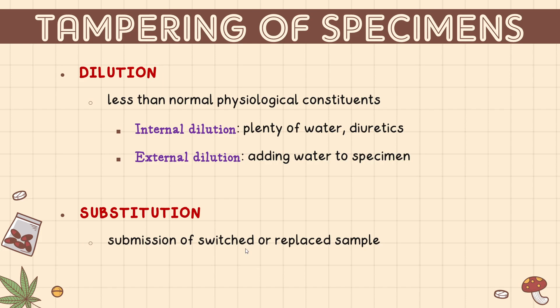That is why in a drug testing center, although there is a hand washing area, it should be far from the toilet or CR where collection happens, and you are directly observed by staff. Even in the toilet area where collection occurs, there should be no water source. Even the water in the toilet bowl is added with a coloring agent so that its color differs from urine, making it unusable for tampering.